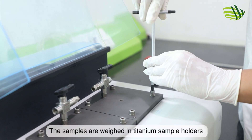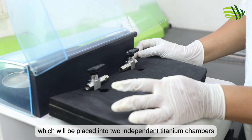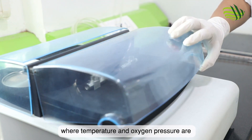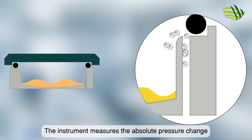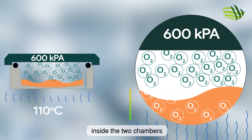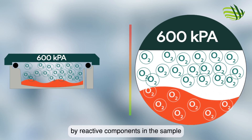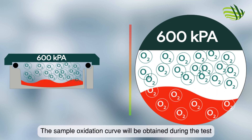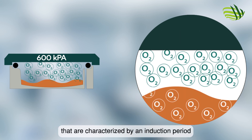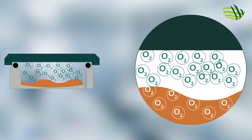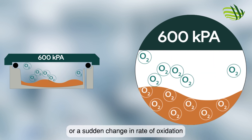Samples are weighed in titanium sample holders and placed into two independent titanium chambers, where temperature and oxygen pressure are automatically adjusted to set values. The system measures the absolute pressure change inside the two chambers and monitors the oxygen uptake by reactive components in the sample. An oxidation curve is obtained during the test, characterized by an induction period corresponding to either a detectable level of rancidity or a sudden change in the rate of oxidation.